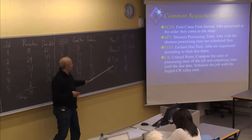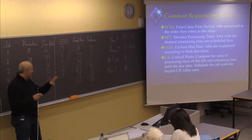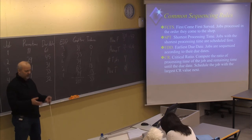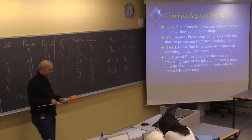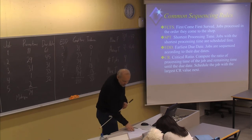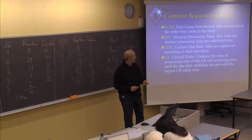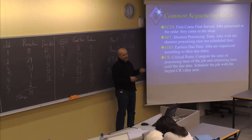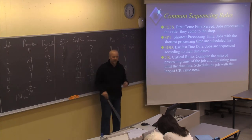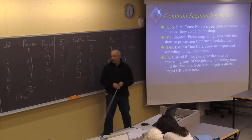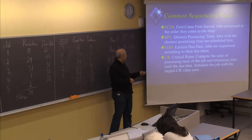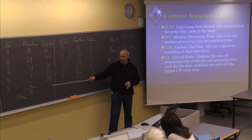It is now four jobs which are slightly delayed, compared to one job that was very much delayed with the SPT strategy. These strategies are quite straightforward: FCFS — just use the given sequence, 1, 2, 3, 4, 5. SPT — sort according to processing time. EDD — sort according to the due date.